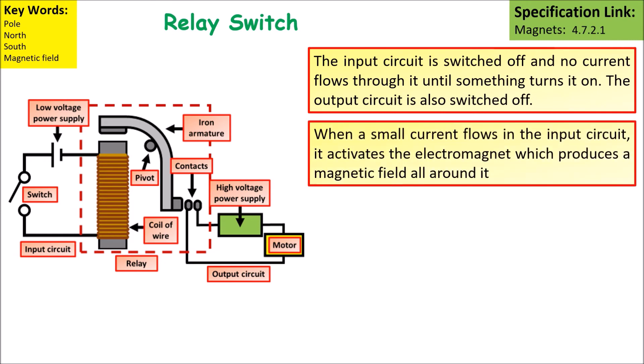When a small current flows in the input circuit, it activates the electromagnet which produces a magnetic field around it.